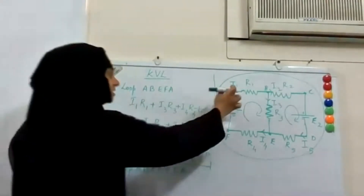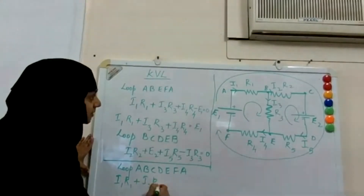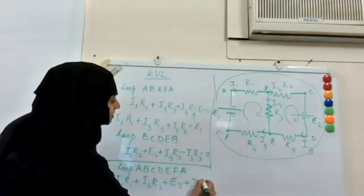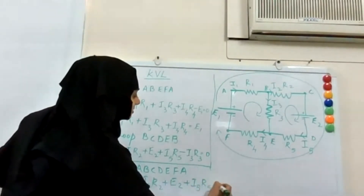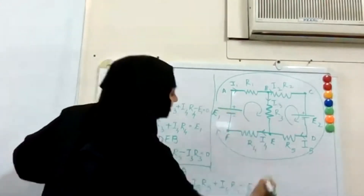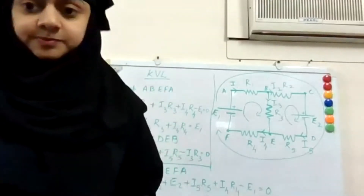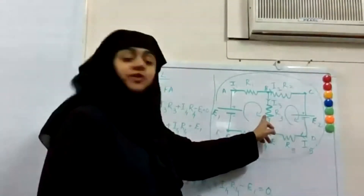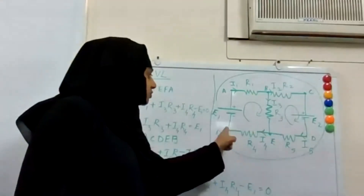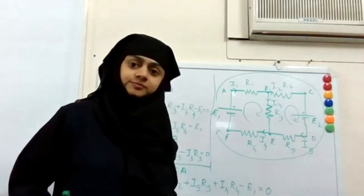Can you tell the equation starting from A? I1·R1, plus I2·R2, plus E2, plus I5·R5, plus I4·R4, minus E1, equals zero — so equal to E1. What happened to I3 and R3? It doesn't come in the way. We are traveling A to B, B to C, D to E, E to F, then A — I3·R3 did not come in our path, so it is not included.